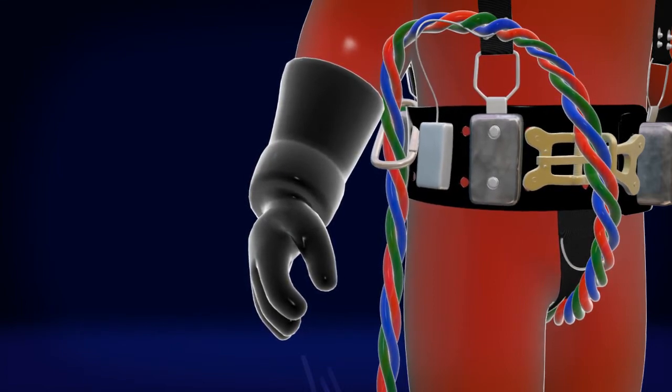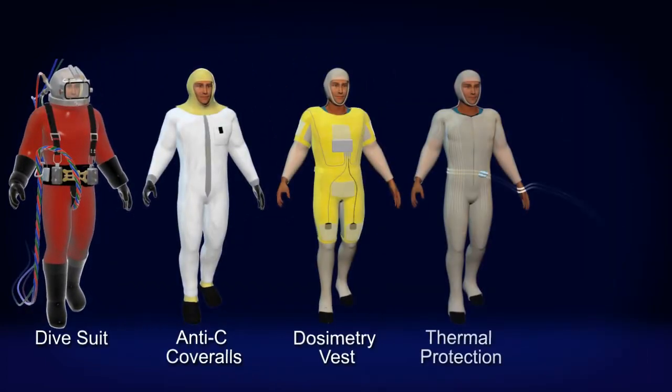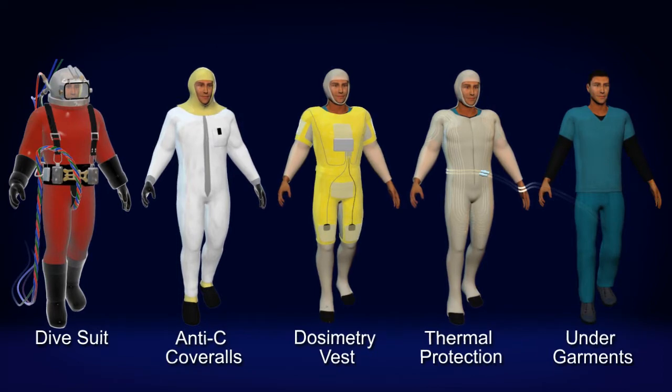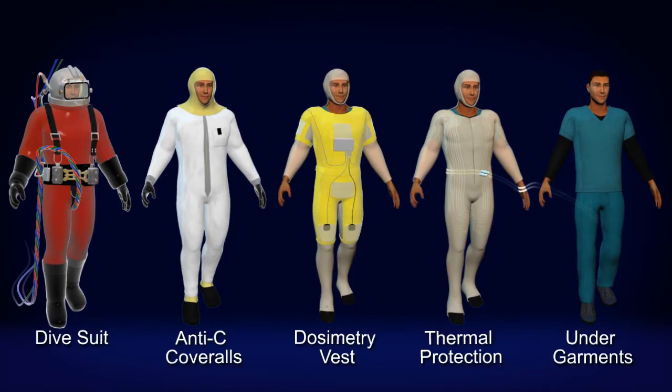The suit is pressurized to keep water out. Under the suit, the diver wears the same protective clothing worn by all other radiation workers. In the unlikely event of a suit leak, the anti-contamination clothing would prevent direct skin contamination.